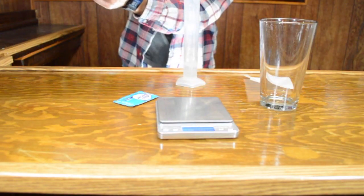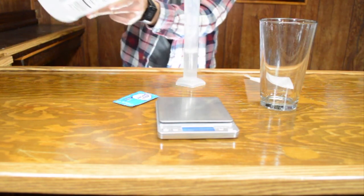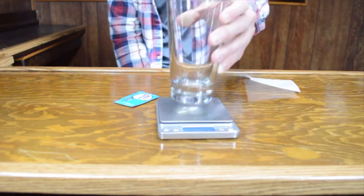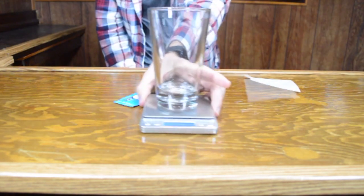First, use a graduated cylinder to measure 35 mils of vinegar and then pour it into the cup. Then, place the cup with vinegar on the balance and record the mass in the data table.